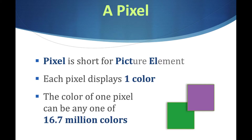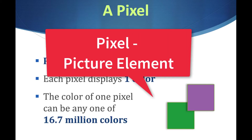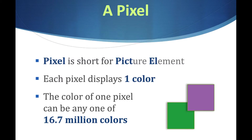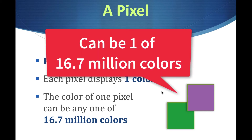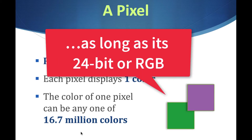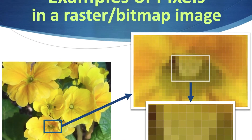The term pixel comes from 'picture element' — that's where the X comes from even though there's no X in 'picture element.' Each pixel can only display one color, although that color can be one of millions depending on its bit depth — specifically 16.7 million colors — and we'll explain the math of that a little bit later.